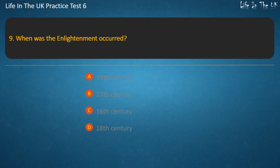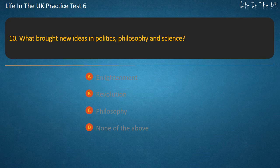Question 9. When did the Enlightenment occur? Options: 19th century, 17th century, 16th century, 18th century. Question 10. What brought new ideas in politics, philosophy and science? Options: Enlightenment, Enlightenment Revolution, Philosophy, None of the above. Answer: Enlightenment.